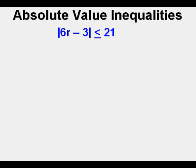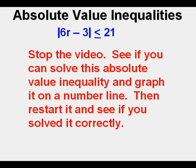Now let's look at this problem. The absolute value of quantity 6r minus 3 is less than or equal to 21. Stop the video — see if you can solve this absolute value inequality and graph it on a number line. Then restart it to see if you solved it correctly.